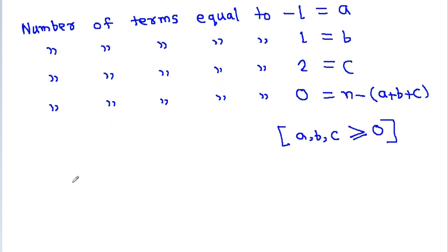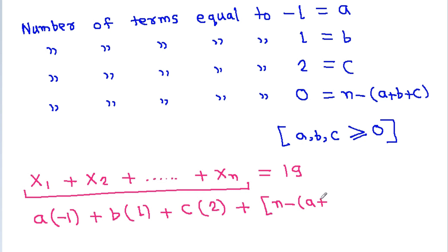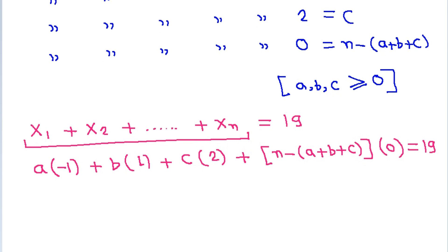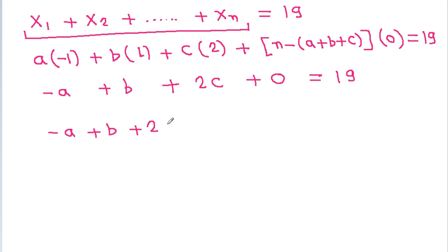We have given that x₁ + x₂ + ... + xₙ = 19. Out of these n terms, a terms are equal to -1, b terms are equal to 1, c terms are equal to 2, and (n - a - b - c) terms are equal to 0. That gives: -a + b + 2c = 19.